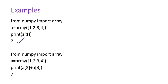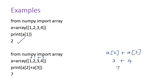Similarly, I can do other operations like print a[2] plus a[3]. The indices are 0, 1, 2, and 3. So a[2] is 3 and a[3] is 4, so it will add 3 and 4 and give the result 7. These are simple examples — I am not going into NumPy directly, I am just explaining these things here.